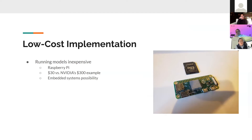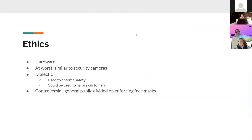A hardware implementation would be a live video stream similar to security cameras or a CCTV system that would detect faces and predict whether they are wearing a mask. The ethics behind this are complicated — while masks keep people safer, the general public is already divided on enforcing face masks. It could be used to enforce safety, but it could also be used to harass customers who don't want to wear masks.